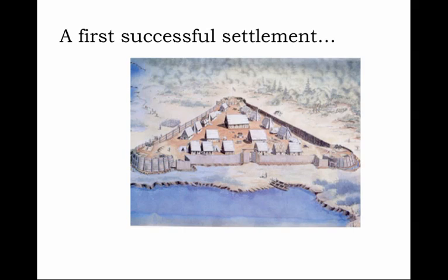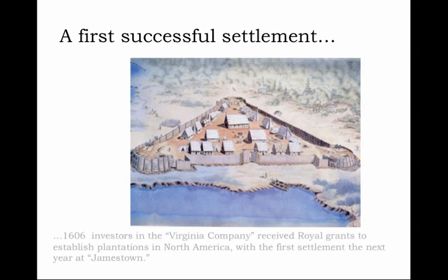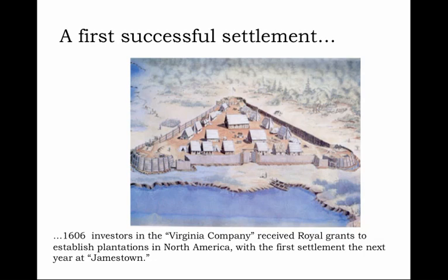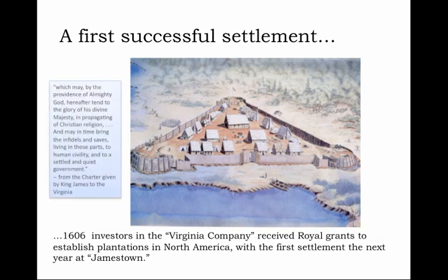As it turns out, Jamestown is the winning ticket for the English, because although it suffered mightily in the early years from poor provisioning, poor planning, and overall poor understanding of the land and its requirements, it does survive to become England's first successful transatlantic American colony — Jamestown, Virginia. Virginia is the name the English gave to the larger region on the Chesapeake, named for the Virgin Queen, Queen Elizabeth, while Jamestown was named for her successor, King James. The seeds had been planted the previous year in 1606 when investors in the Virginia Company received royal grants, with the first settlement in 1607 being Jamestown.